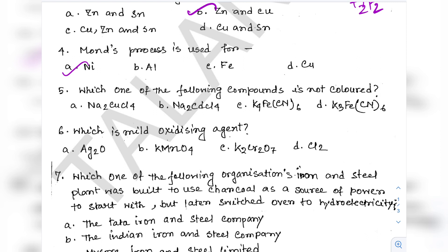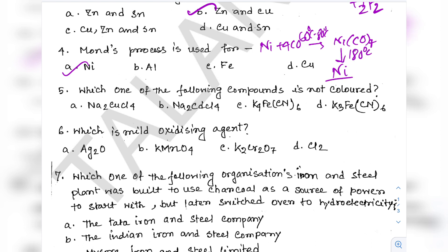In Mond's process, Ni reacts with 4 CO at 60–80°C to produce Ni(CO)4, which is then further heated at 180°C to produce pure Ni. That is the process in a nutshell.